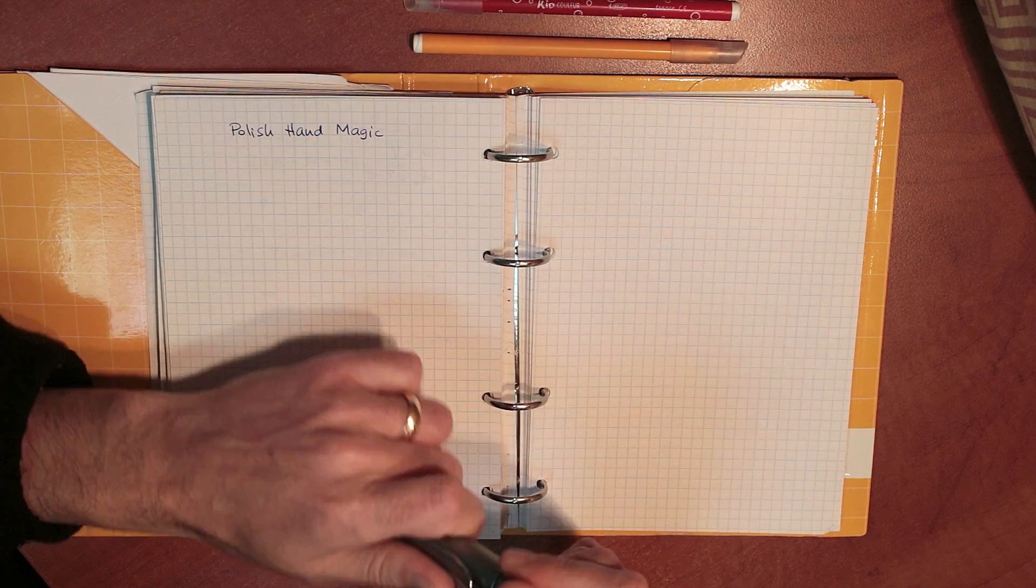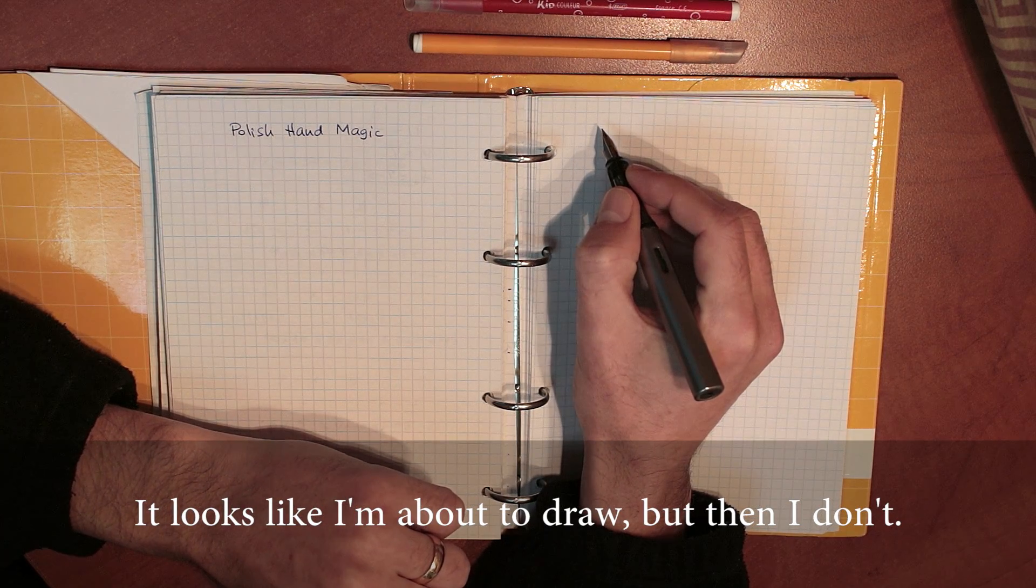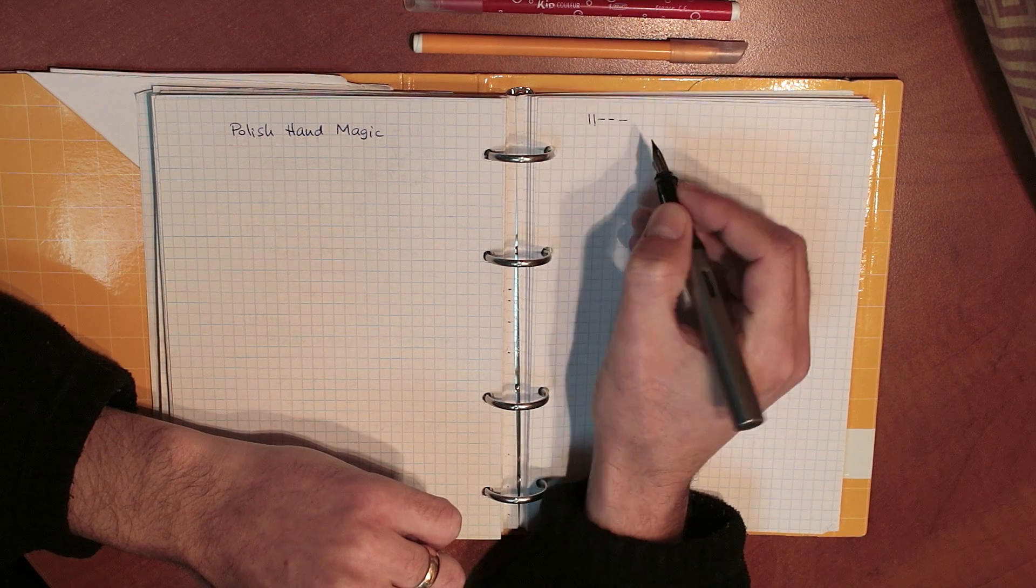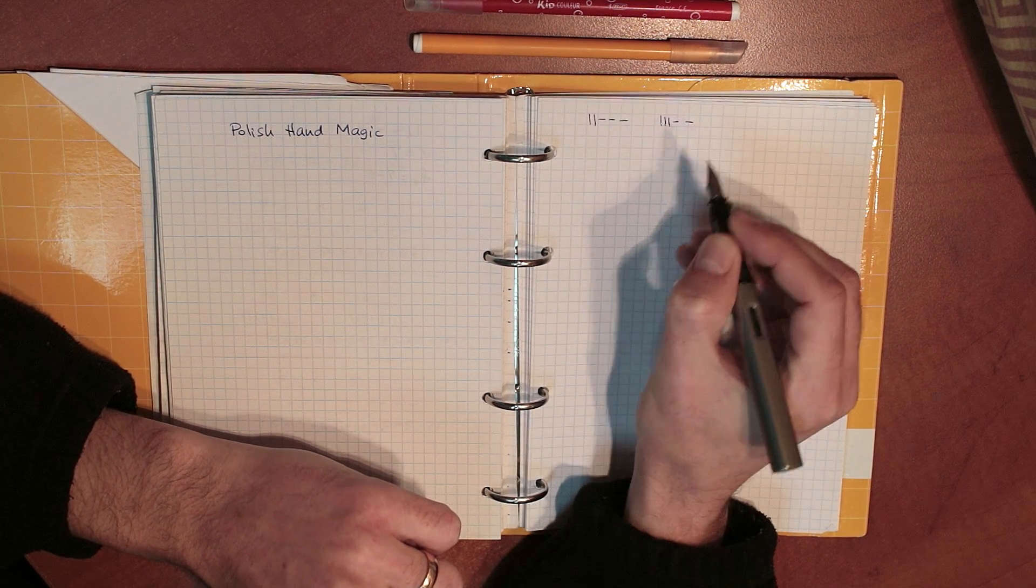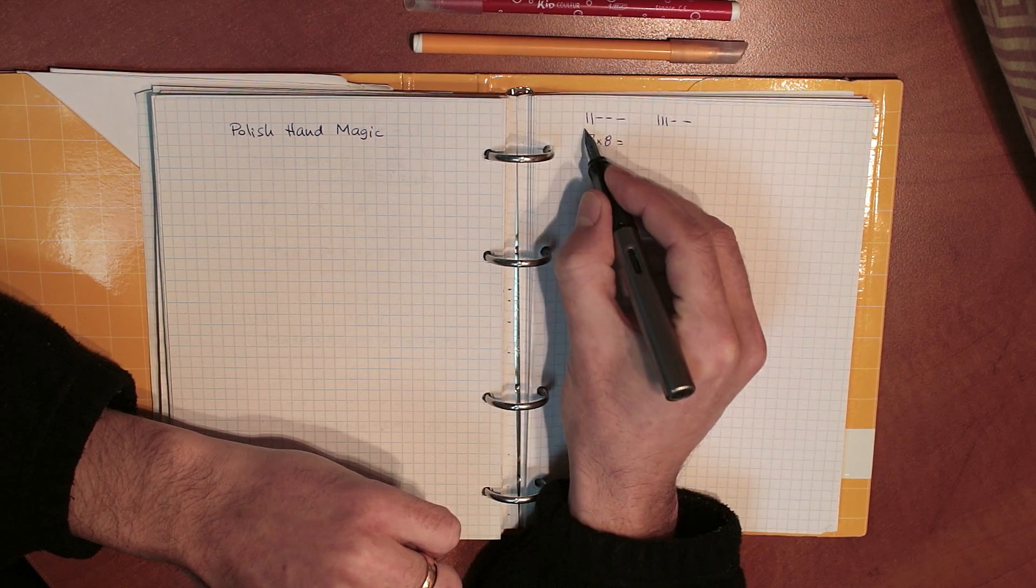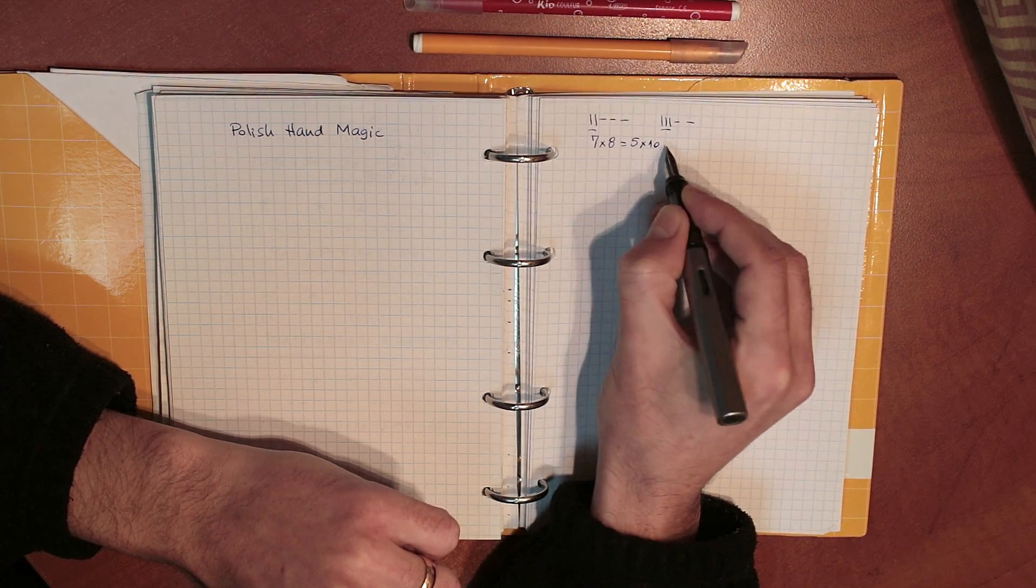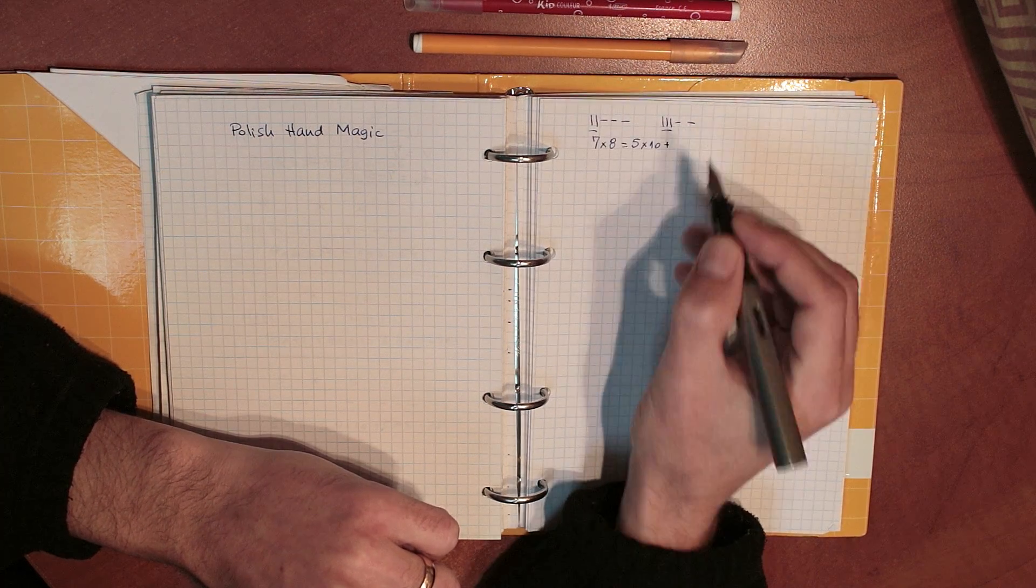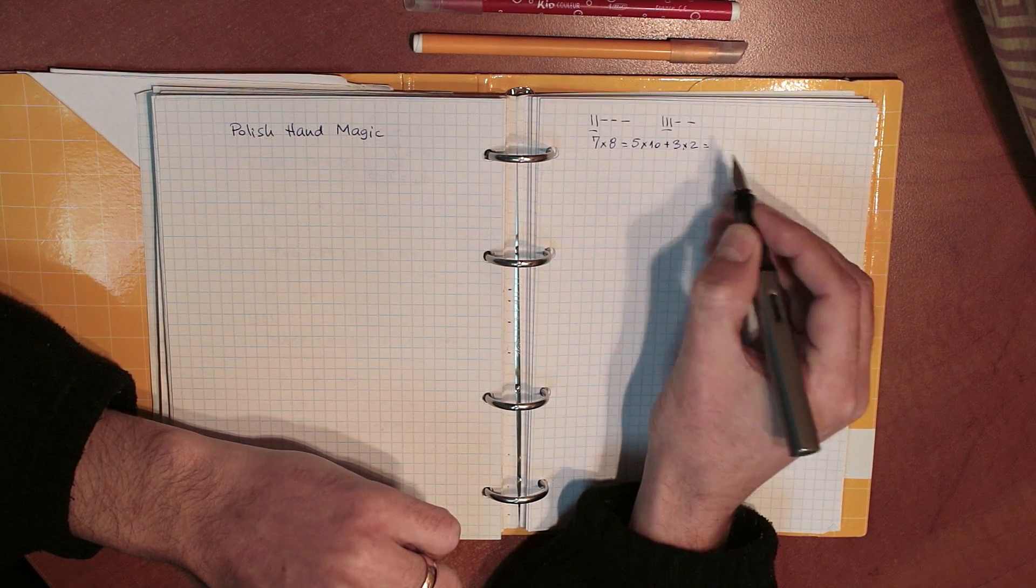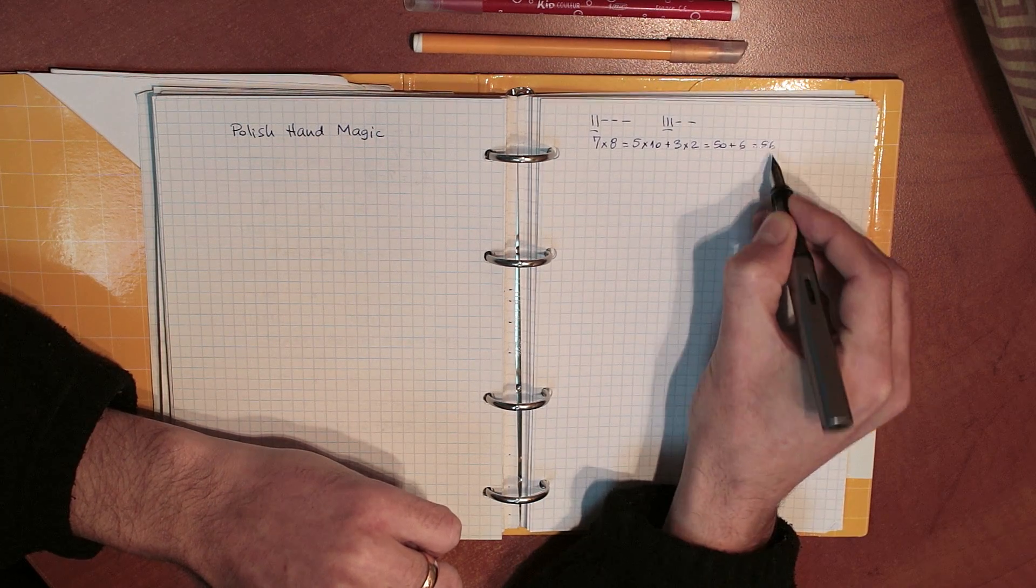Let's try to put this on paper somehow. I will draw a vertical line for a raised finger, and a horizontal line for a lowered finger. So in my case, the 7 looks like this, and the 8 looks like this. And what did I do? Well, I took the total number of raised fingers on my two hands, and I multiplied that by 10. So 5 times 10. And then I multiplied together the number of lowered fingers, which is 3 times 2. And the result is 50 plus 6, which is 56. Correct.